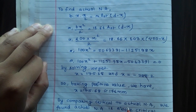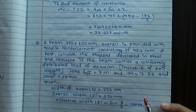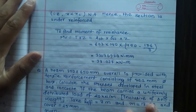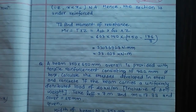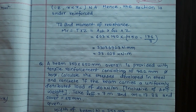Comparing critical to actual neutral axis: actual neutral axis (X = 176 mm) is less than critical neutral axis (XC = 180 mm), so XC > X. Therefore the section is under-reinforced. Note: if XC < X, section is over-reinforced; if X = XC, section is balanced.